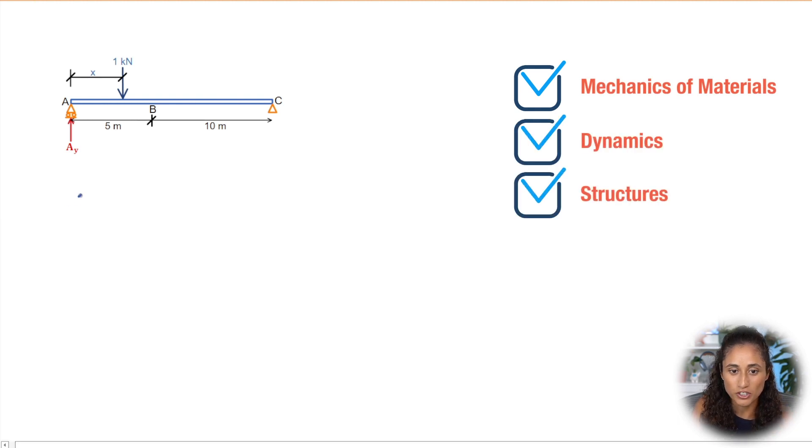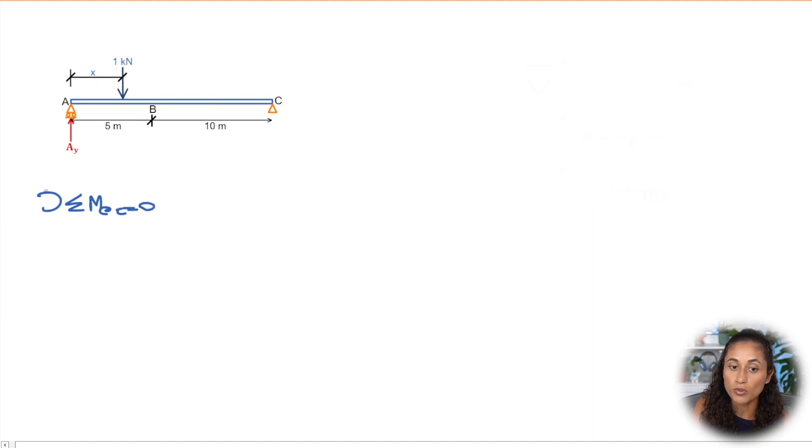Now, let's do the summation of the moment at C and we're gonna equal it to zero and we're gonna assume counterclockwise to be positive. So if we do that, the first thing we're gonna have is AY. It's gonna be minus because it's going opposite of our sign convention. So we're gonna do minus AY and then we're gonna multiply it by the moment arm, which is 15.